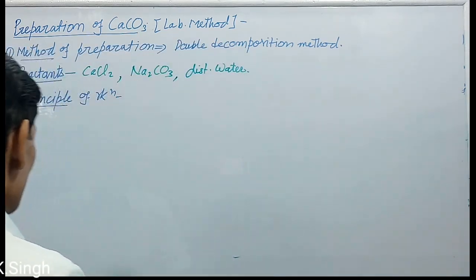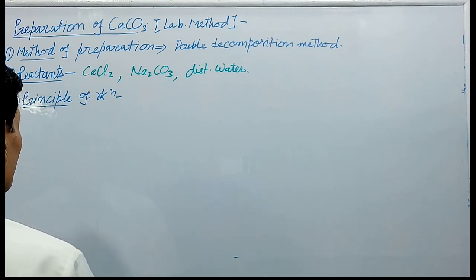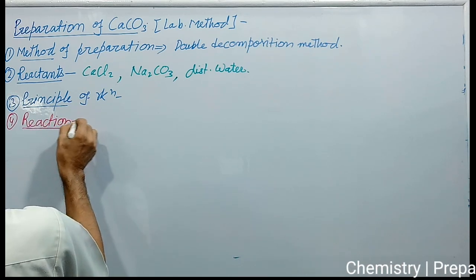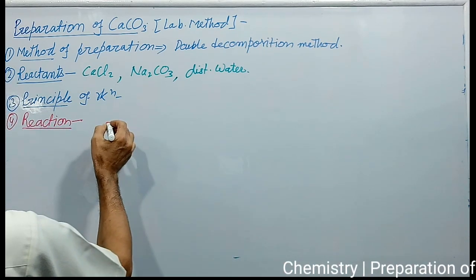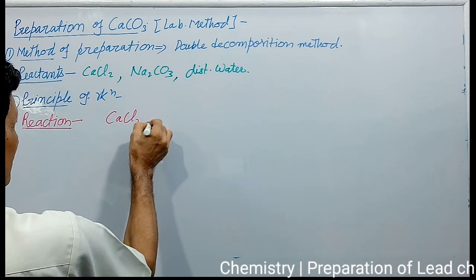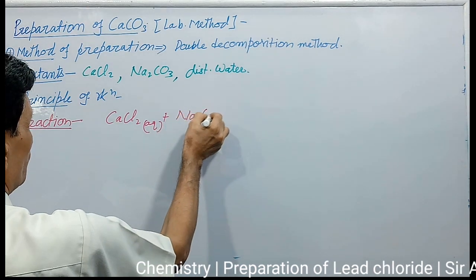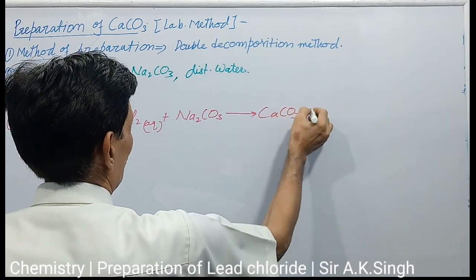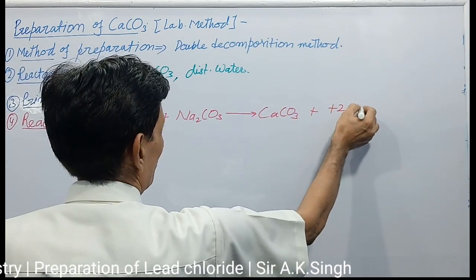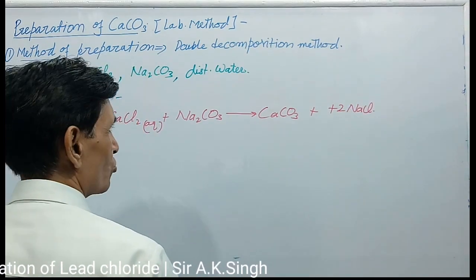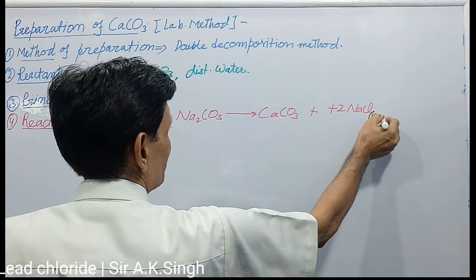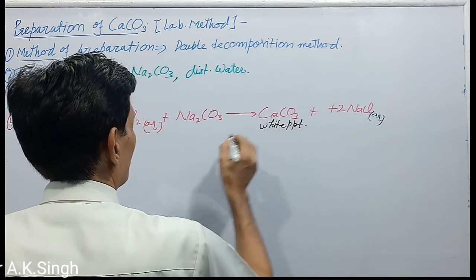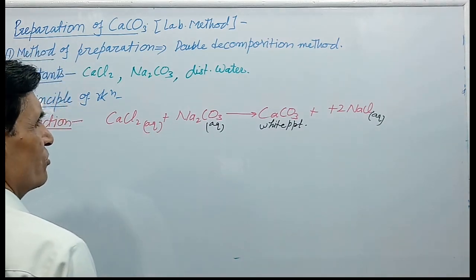Now let us see the reaction taking place. Calcium chloride reacts with sodium carbonate solution to form calcium carbonate — a white precipitate — plus sodium chloride in aqueous state. Calcium carbonate is the white precipitate and sodium chloride is the aqueous solution.